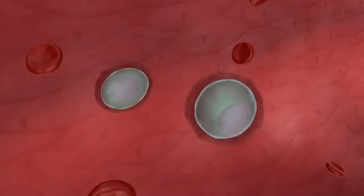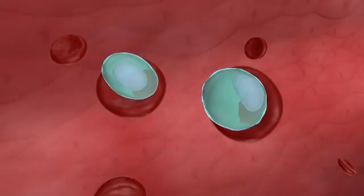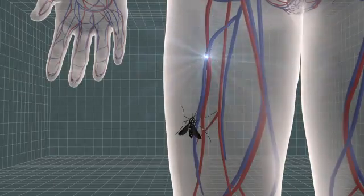Blood stage parasites, or gametocytes, released by infected cells, travel through the bloodstream and wait to be picked up by female Anopheles mosquitoes during a blood meal.